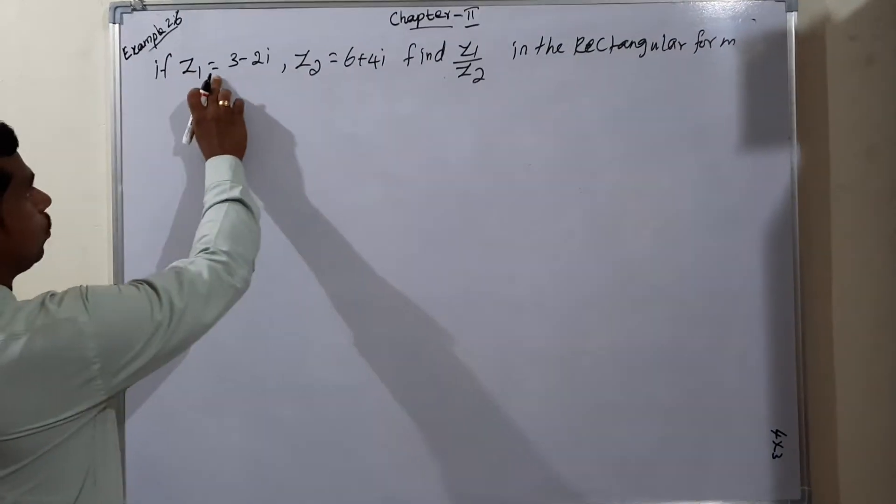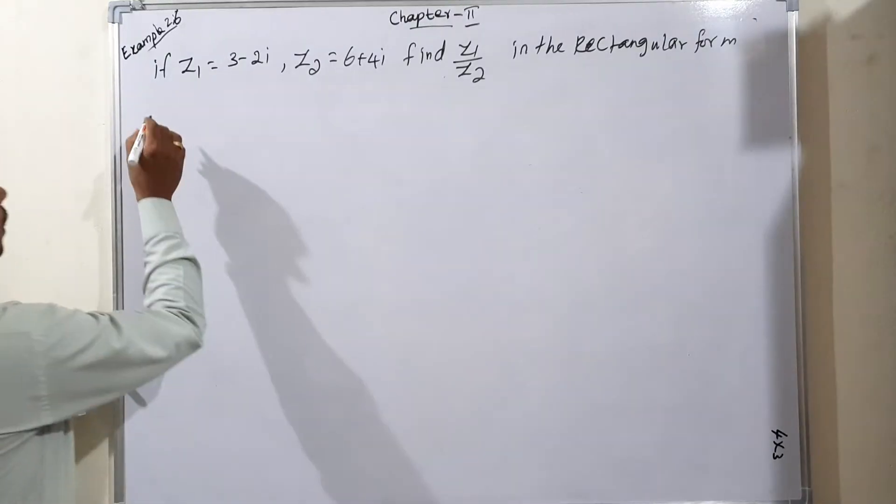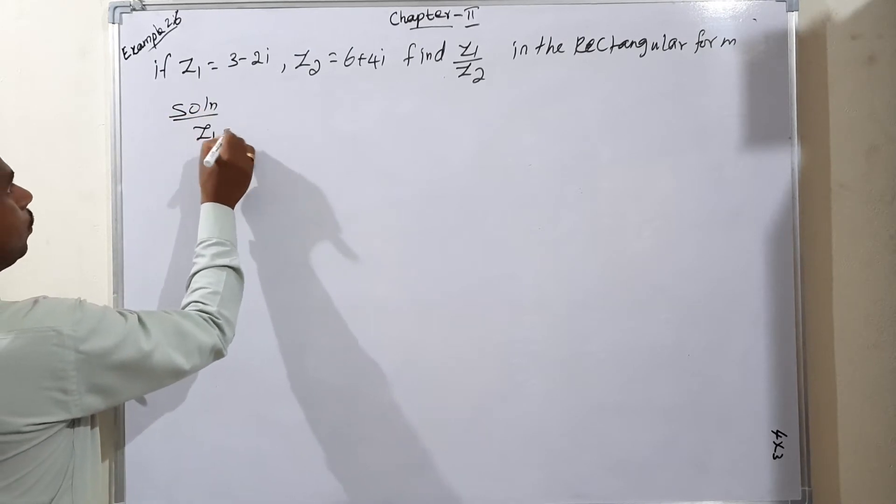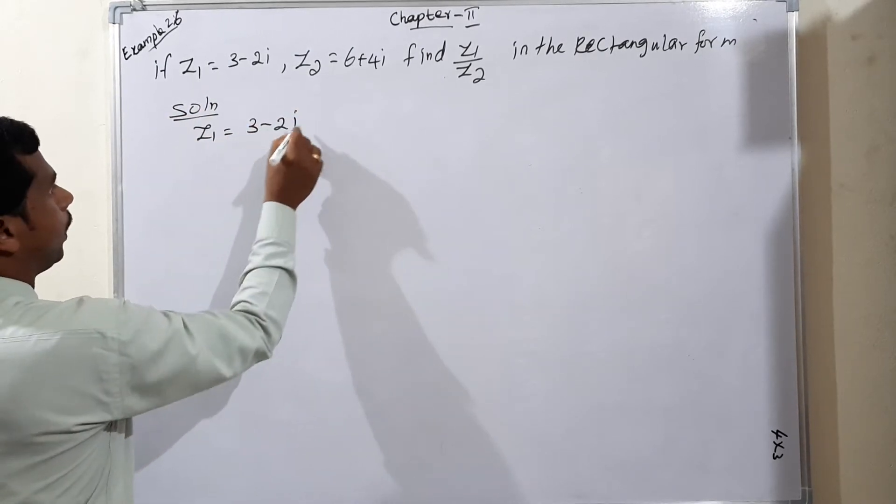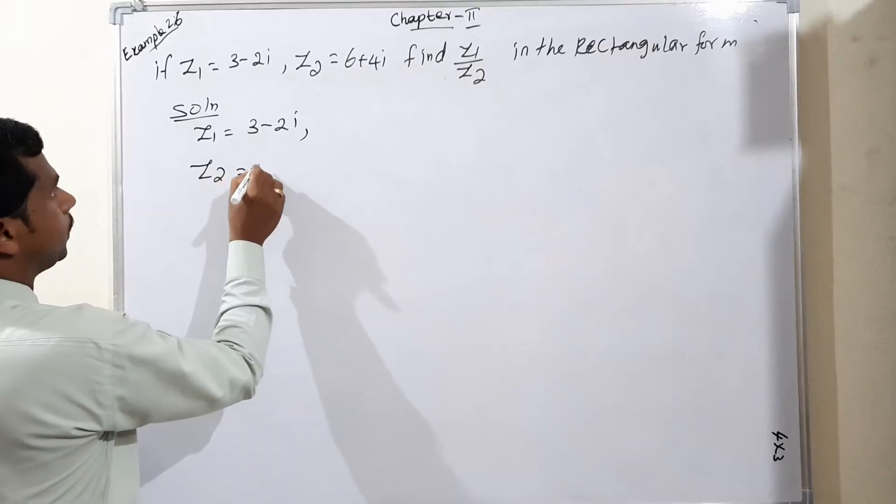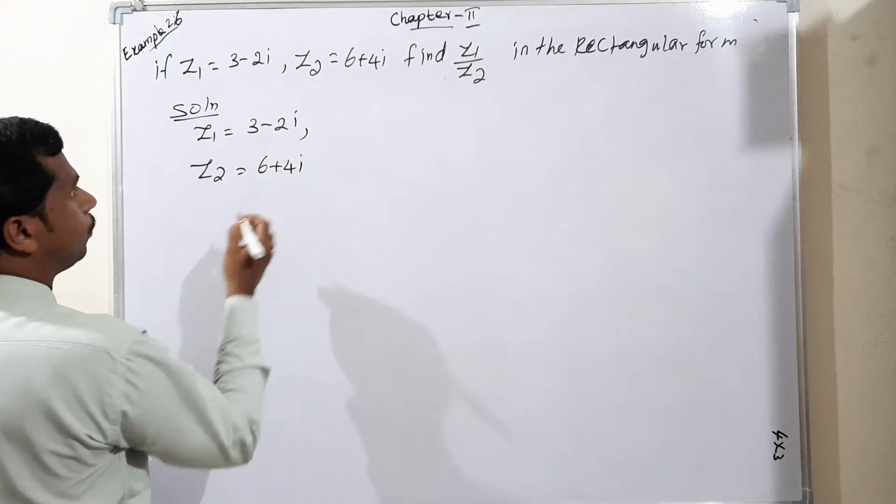So what is the question? Two conditions are there, Z1 and Z2. Find Z1 by Z2. Solution: Z1 is equal to 3 minus 2i, then Z2 is equal to 6 plus 4i.